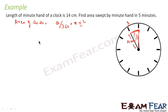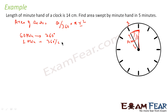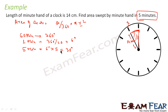Now let us find the value of theta. We know that the minute hand completes one full rotation in 60 minutes. So in 60 minutes it covers 360 degrees, because one complete revolution is 360 degrees. In one minute it covers 360 divided by 60, that is 6 degrees. In five minutes it covers 6 degrees into 5, which is 30 degrees. So the angle covered by the minute hand in five minutes is 30 degrees.